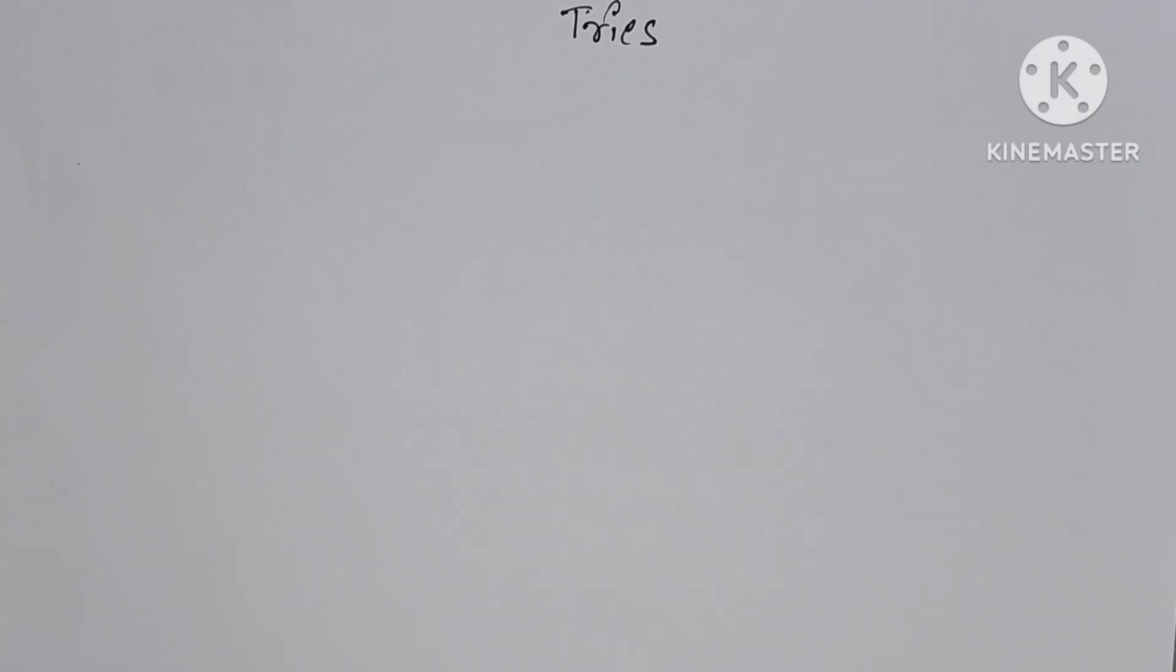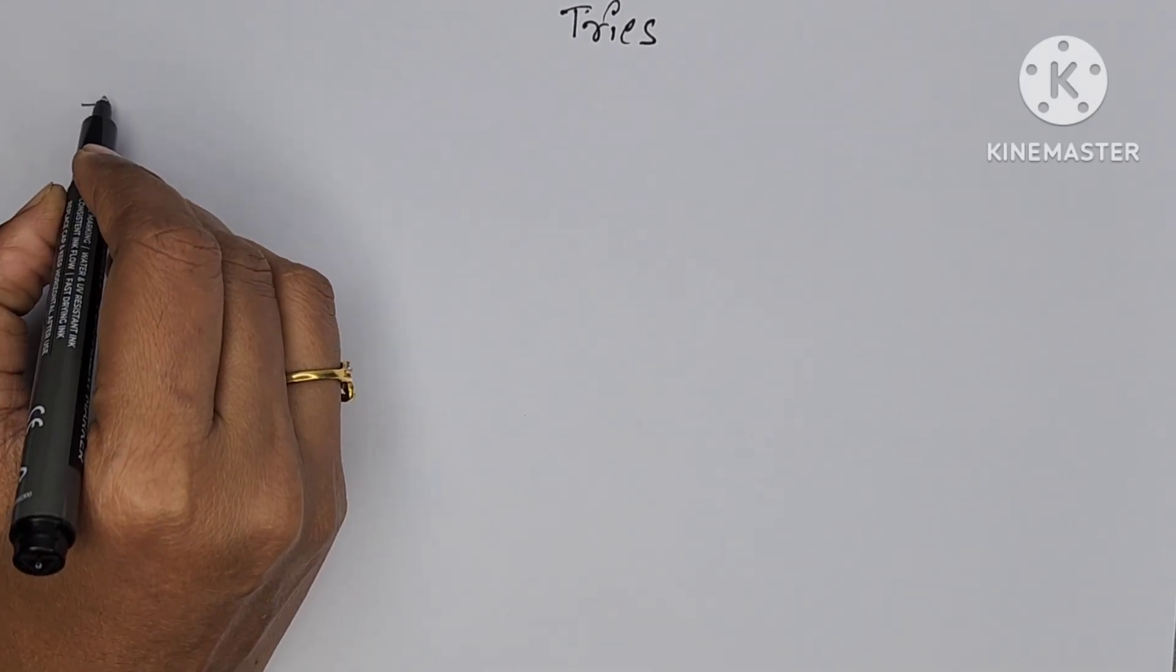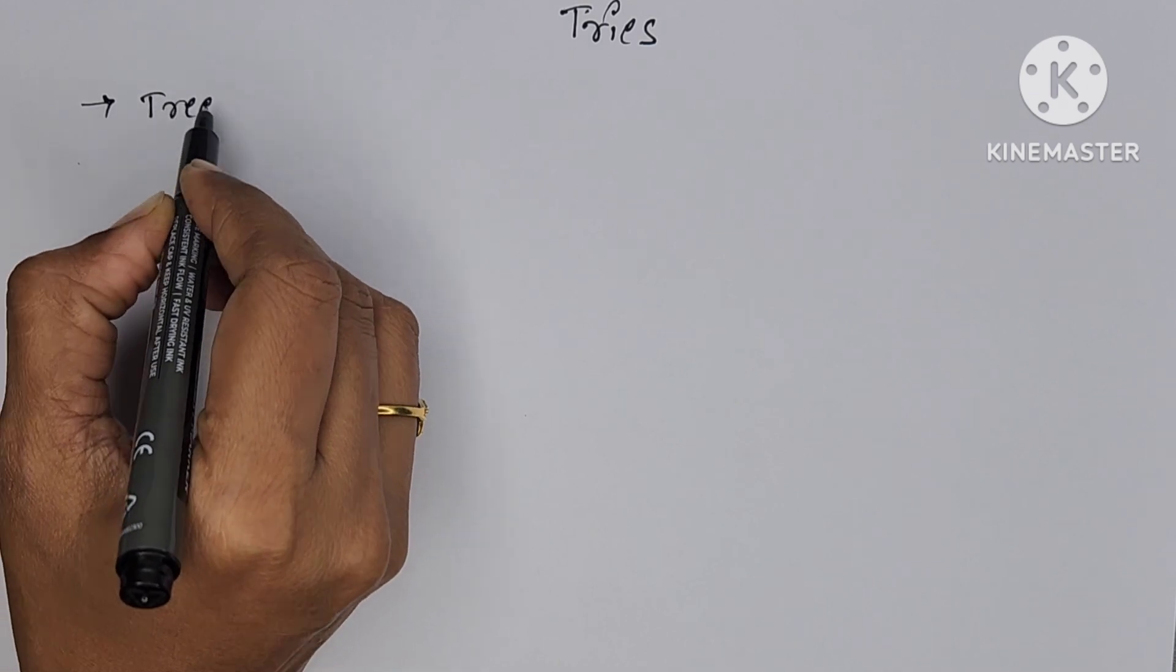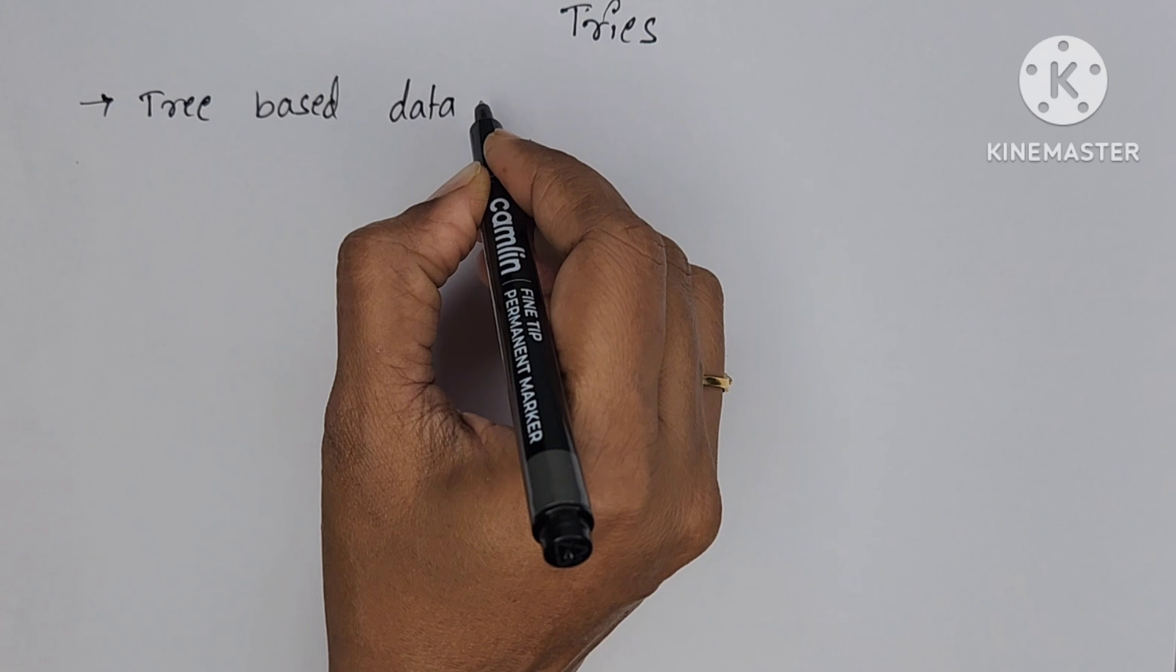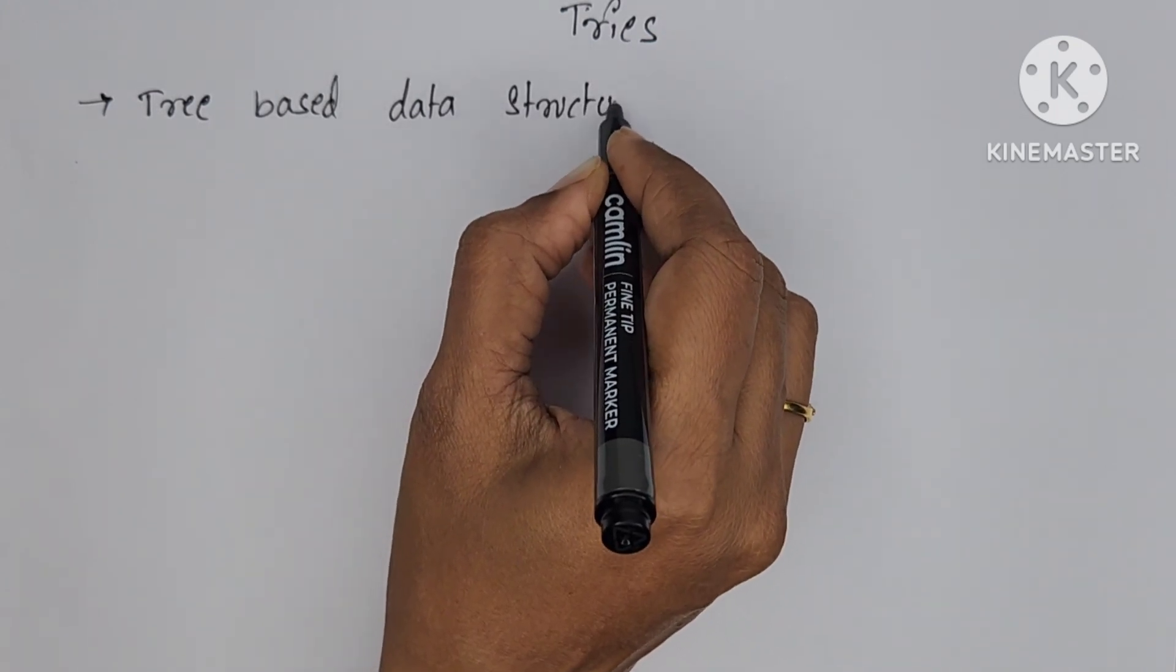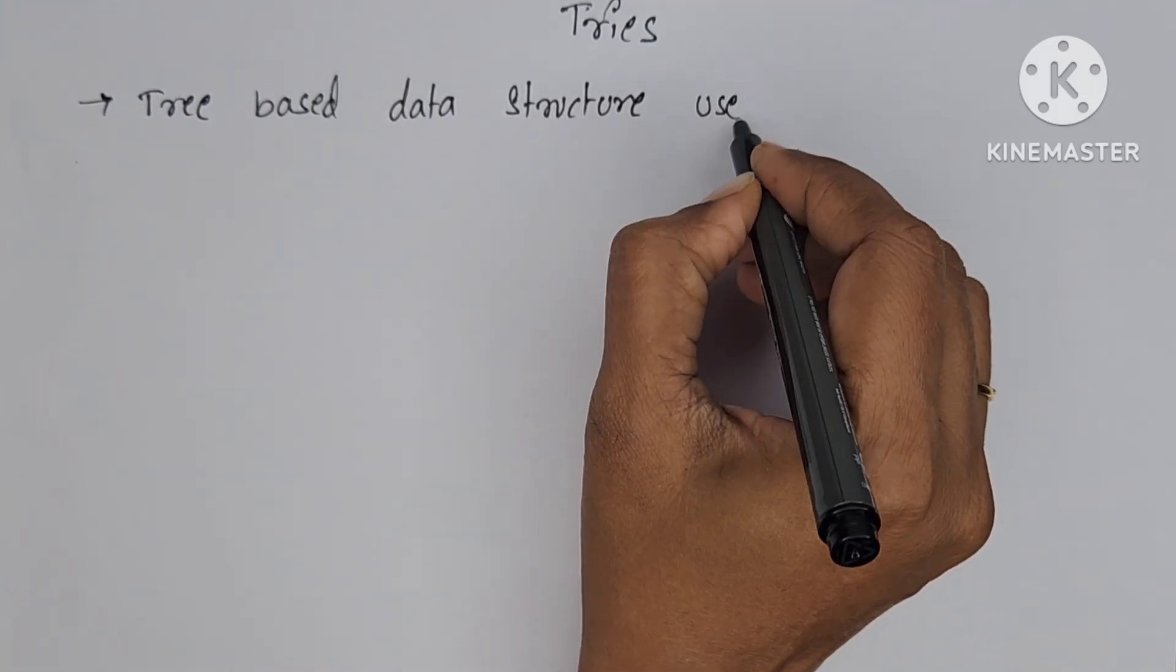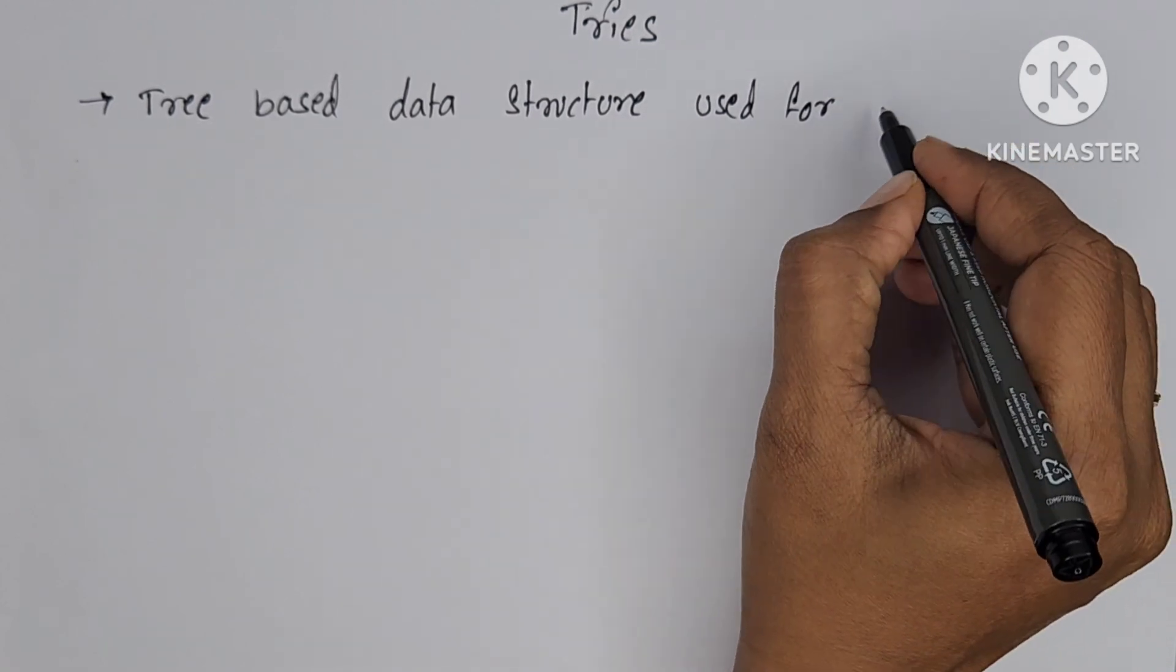Hello all, in this video we'll see what is trie, applications, and types of tries. Trie is a tree data structure. Tree means a collection of nodes and edges used to store strings.